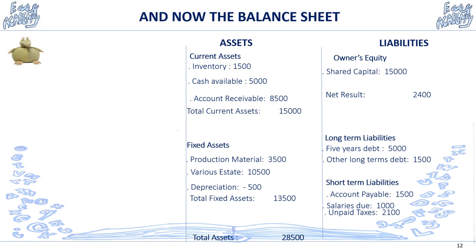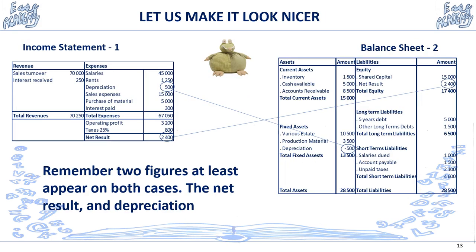Total assets equal 28,500. On the liability side: owners' equity is share capital 15,000 plus net result 2,400, giving total equity of 17,400. Total long-term liabilities: 5,000 plus 1,500 equals 6,500. All short-term liabilities — accounts payable, salaries due, and unpaid taxes — equal 4,500. Adding everything together gives 28,500. Assets and liabilities are perfectly equal.